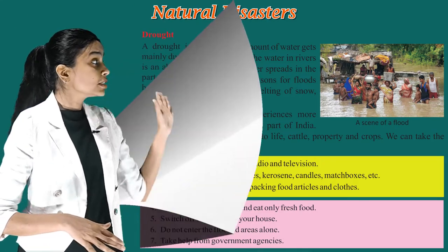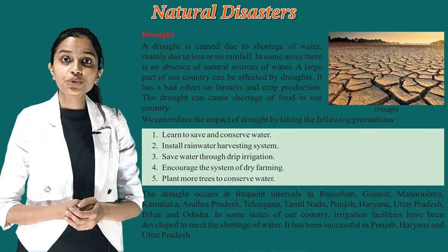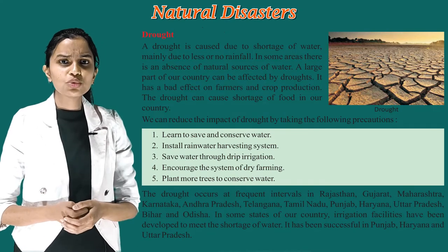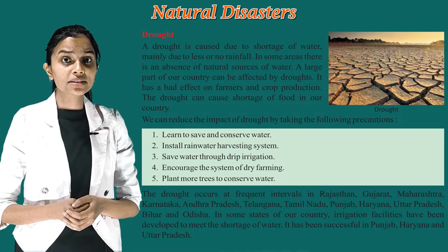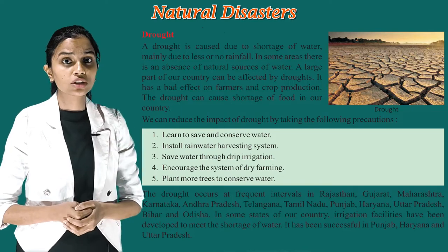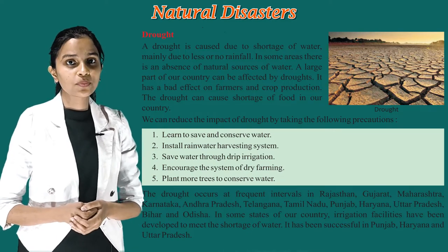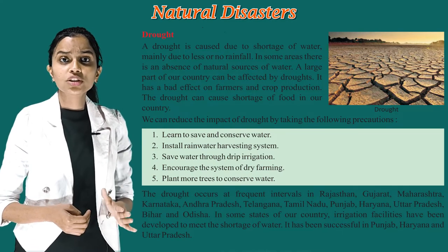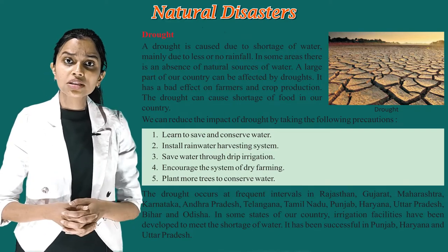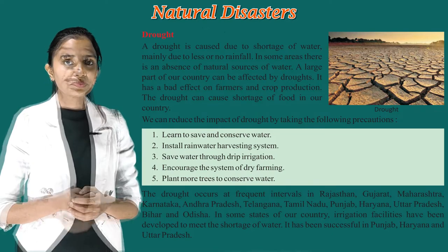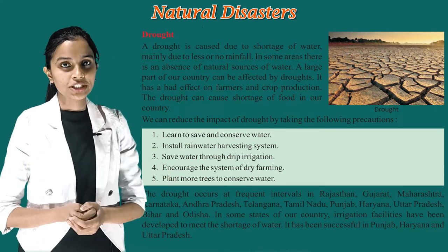The next natural disaster is drought. A drought is caused due to a shortage of water, mainly due to less or no rainfall. In some areas, there is an absence of a natural source of water. A large part of our country can be affected by droughts. It has bad effects on farmers and crop production, and can cause a shortage of food in our country.